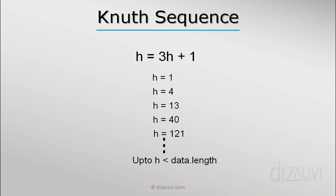So if we have 100 elements in an array, the interval chosen for the first iteration will be 40, because according to Knuth sequence we cannot use 121—that would not make sense. In the next iteration we would choose an interval of 13, then 4, and finally 1. Let's understand with the help of an example.